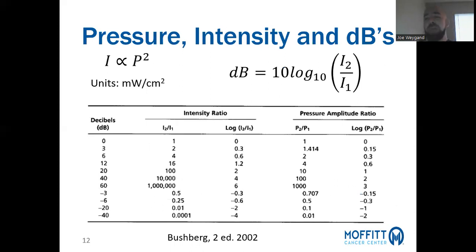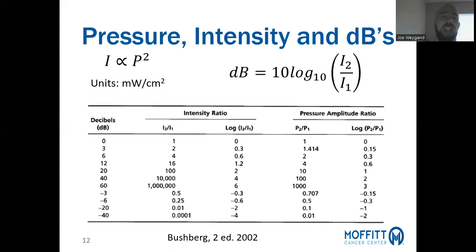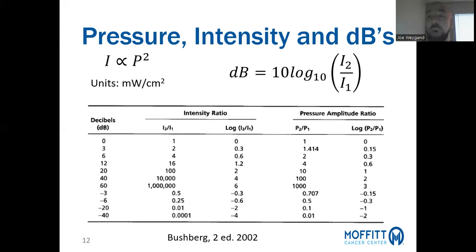As sound propagates, it undergoes pressure amplitude oscillations over time. Intensity is proportional to the square of the pressure, so while pressure can be negative, intensity is always positive. Units of intensity are milliwatts per centimeter squared. In ultrasound, changes in intensity are often expressed in decibels, defined as 10 times the log base 10 of the ratio of two intensities. An increase of 3 dB corresponds to doubling the intensity; an increase of 30 dB corresponds to a factor of 1,000.